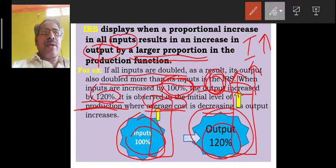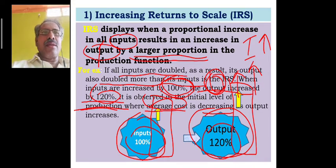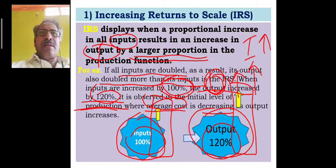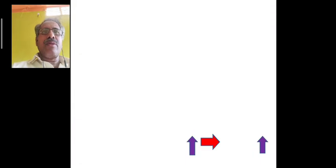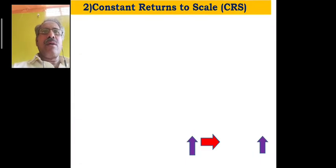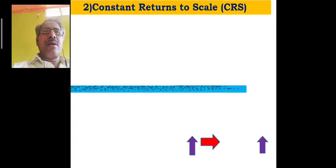That's why we can understand the first stage of Returns to Scale, which is Increasing Returns to Scale. Next, we shall go for the second one — Constant Returns to Scale.